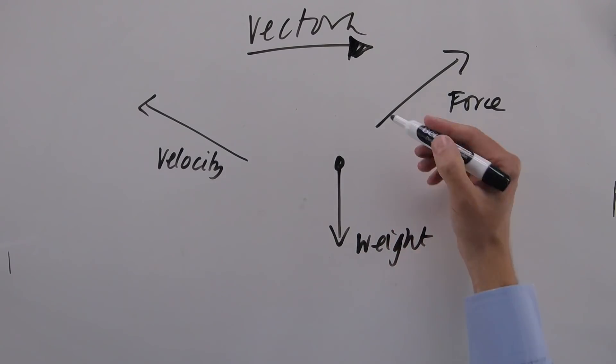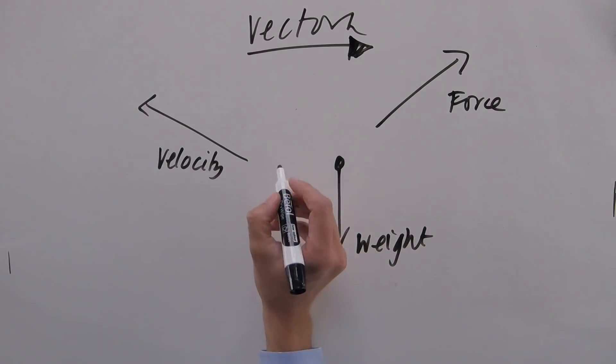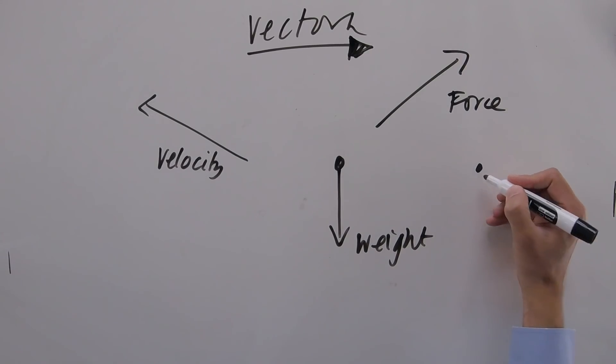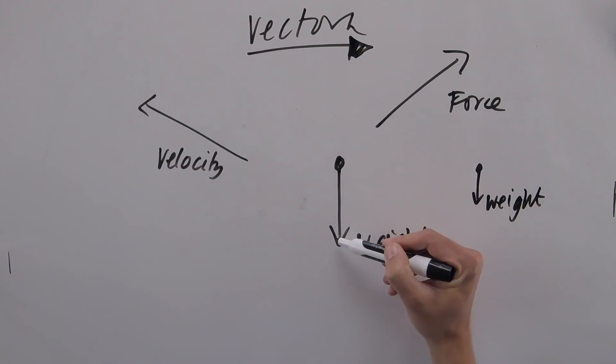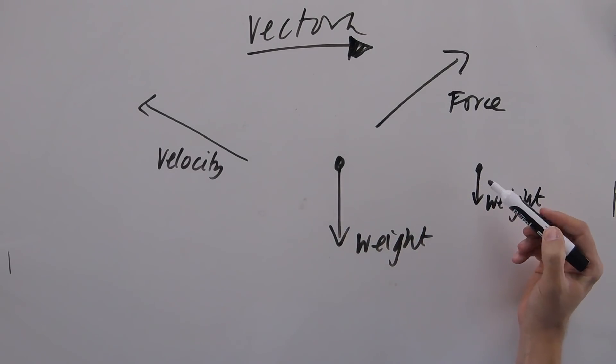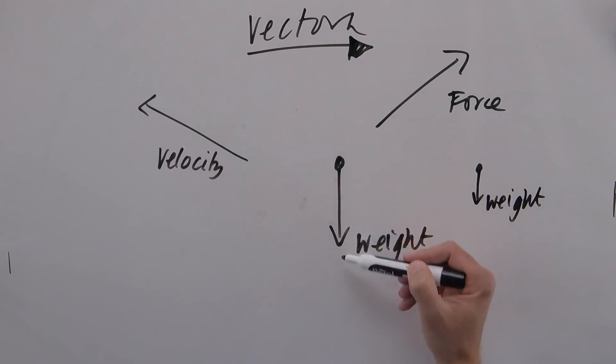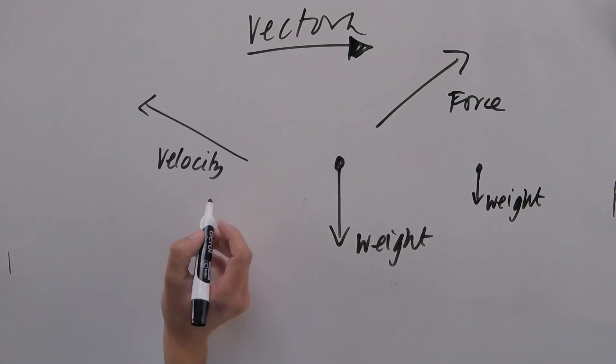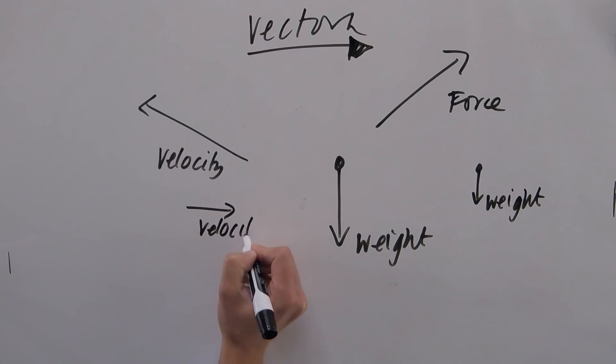Well, the length of the arrow, this length here, if I did another weight and I had another object here, this arrow is shorter, this arrow is longer. Therefore this arrow here has a bigger magnitude, so it's a bigger force. If I did another velocity over here, so this is a smaller velocity, a bigger velocity. So the length of the arrow equals the magnitude.